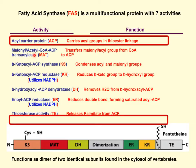Another function of the enzyme is the malonyl acetyl-CoA ACP translocase, abbreviated MAT. What it actually does is transfer the malonyl acyl group from coenzyme A to the protein itself. The steps in fatty acid synthesis are condensation, reduction, dehydration, and reduction. Those four steps repeat over and over until you get a 16-carbon palmitate or palmitic acid.